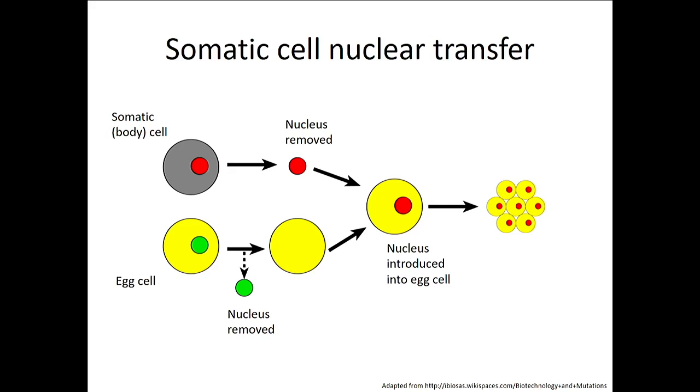Now remember the egg cell has only got DNA from the mother, but the body cell has got DNA from the mother and the father. So he removed the nucleus from this egg cell, so he had this shell, and he removed the nucleus from this body cell and placed it within the egg. So this in fact is analogous to a fertilized egg because it has DNA from both mother and father.